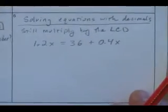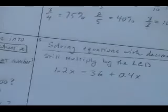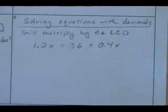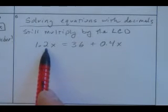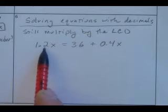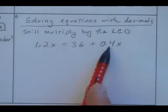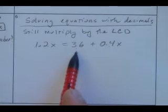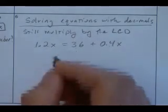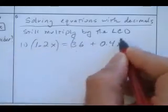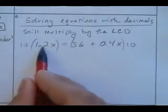Once we get the equation, how do we solve these? When you want to solve equations with decimals, it's very much like we did last time. You're still going to multiply by the LCD. This 1.2 is the same thing as 12 tenths. This is 4 tenths. This is 36 wholes. So I have a 1 in the denominator, a 10, and a 10. So I can multiply both sides of this by 10.